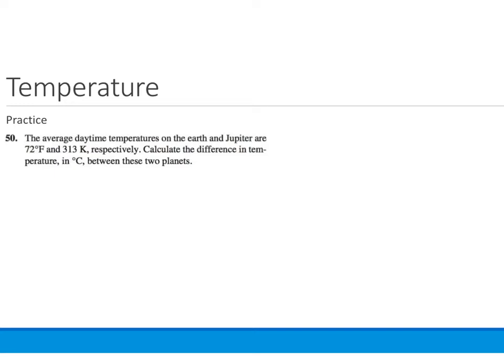We're going to start this problem like we would any other problem. We're going to pull out the relevant information. The temperature on Earth is 72 degrees Fahrenheit, and the temperature on Jupiter is 313 Kelvin. It says calculate the difference in temperature, so temperature on Earth minus the temperature on Jupiter, in degrees C.